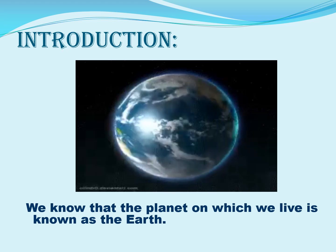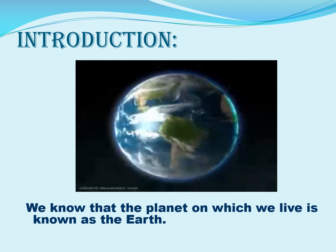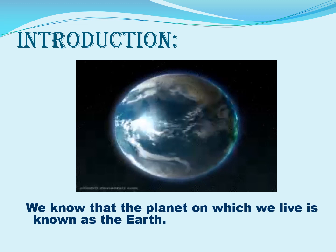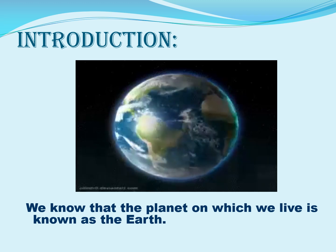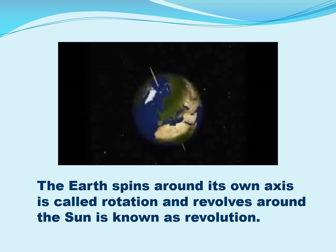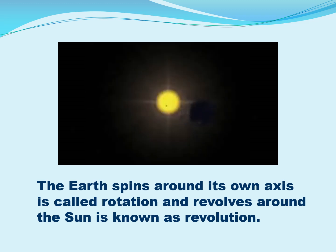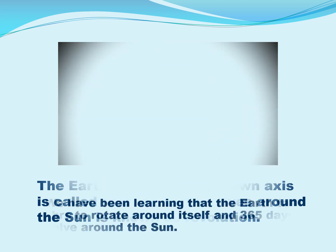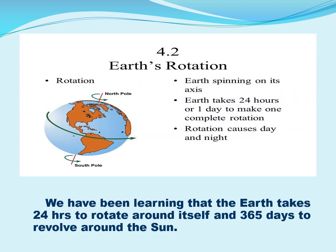Introduction. We know that the planet on which we live is known as the Earth. The Earth spins around its own axis — this is called rotation — and it revolves around the sun, which is known as revolution. The Earth takes 24 hours to rotate around itself and 365 days to revolve around the sun.